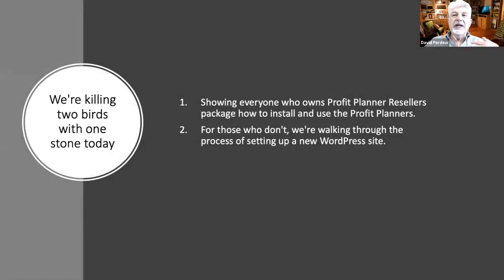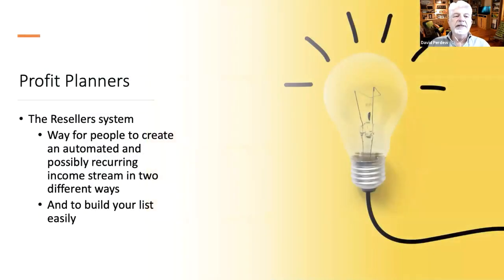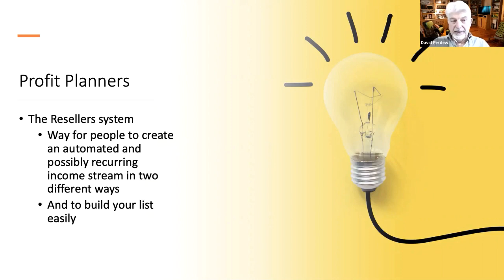The first thing is we're killing two birds with one stone here today. We're showing everyone who owns the Profit Planners resellers package how to install and use the Profit Planners, and for those who don't, we're walking them through the process of setting up a new WordPress site. The reseller system is basically just a way for you to create an income stream in an automated way, possibly with recurring income in two different ways, and to build your list the easy way.